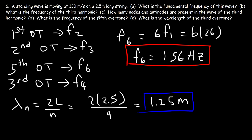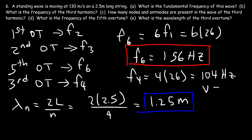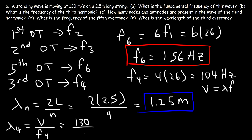There's another way to calculate the wavelength of the 4th harmonic. Find the frequency of the 4th harmonic, which is 4 times 26, giving 104 Hz. Then use the equation: wavelength equals wave speed divided by frequency. So 130 divided by 104 gives the same answer of 1.25 meters.